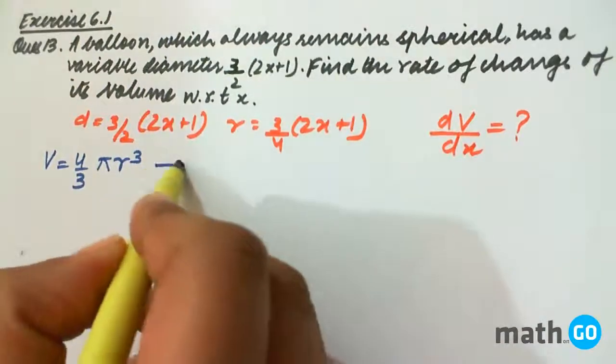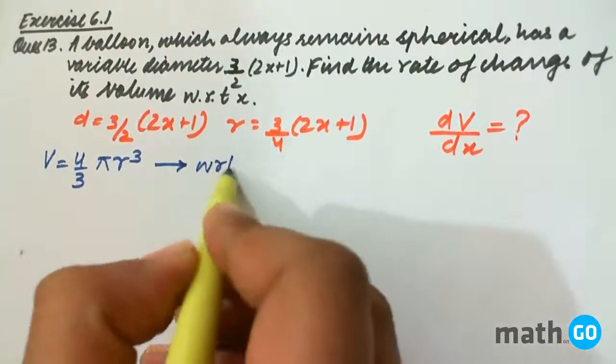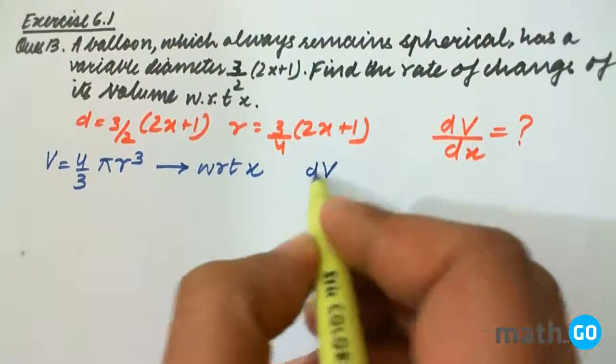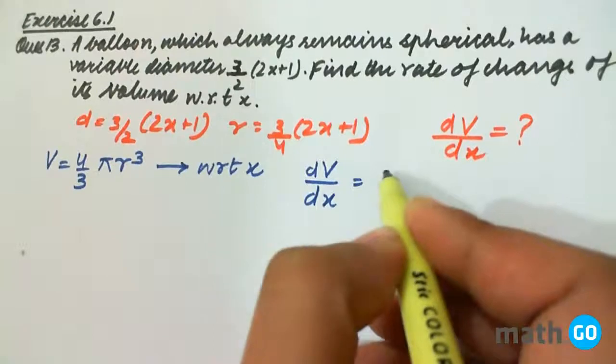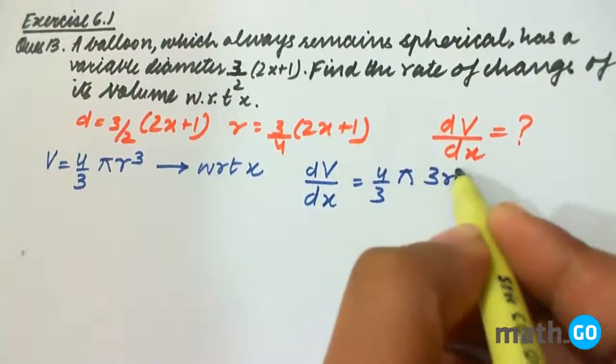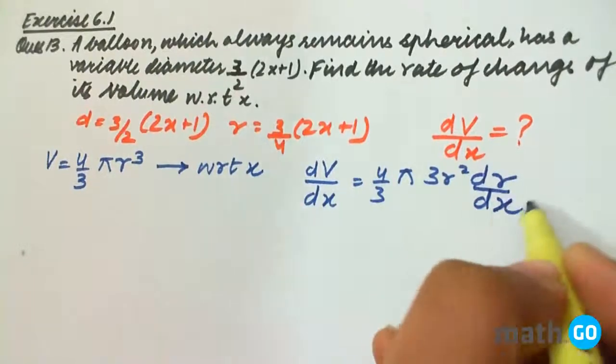If we differentiate it with respect to x, we get dV/dx equals 4/3 π into 3r² dr/dx.